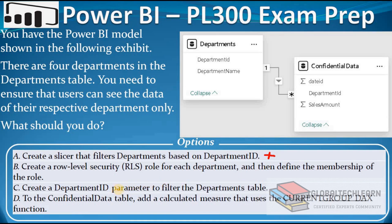The third option is to create a Department ID parameter to filter the departments table. Using a parameter, we can filter the data. But if a user provides the Department ID for a different department they don't belong to, they will be able to see data for that other department. So this option will not fulfill the requirement. The last option is to add a calculated measure to the Confidential Data table that uses the CURRENTGROUP DAX function. This DAX function will also not work, as we don't want to calculate anything here — the requirement is to restrict data. So now let's try option B in Power BI Desktop.